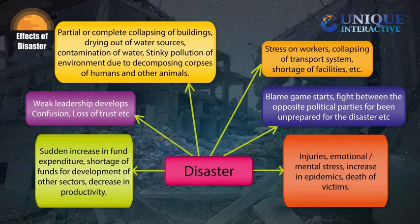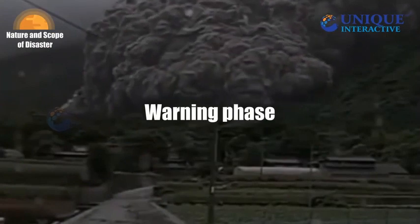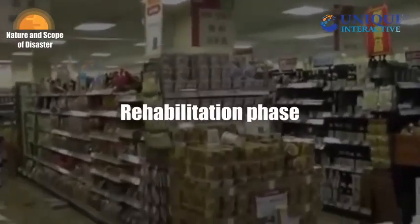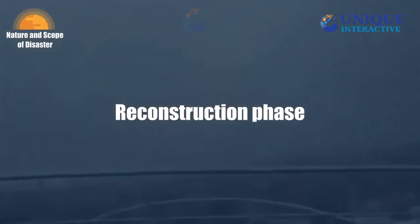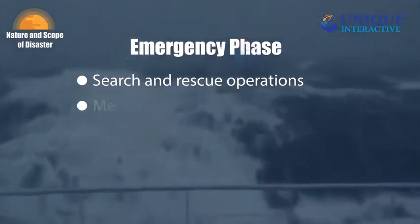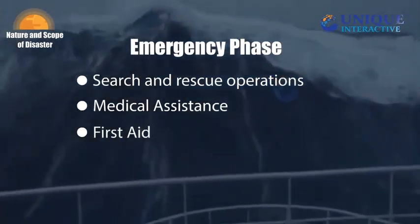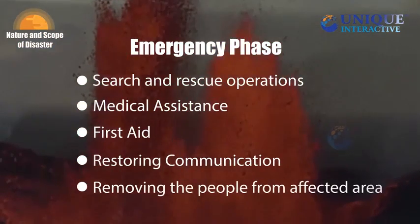Nature and Scope of Disaster. The nature and scope of disaster is divided into six phases: pre-disaster phase, warning phase, emergency phase, rehabilitation phase, and reconstruction phase. But for a common citizen, only three aspects are most important. Phase 1 — Phase of Emergency: maximum lives can be saved by quick actions during this phase. Various actions like search and rescue operations, medical assistance, first aid, restoring communication services, and removing people from the affected area are expected. The gravity of the disaster can be estimated in this phase only.